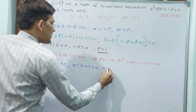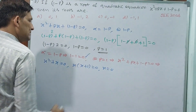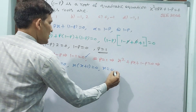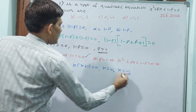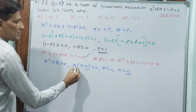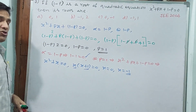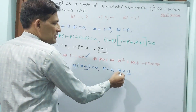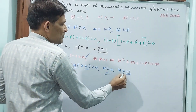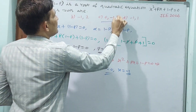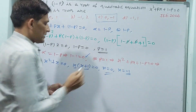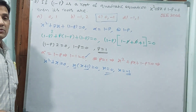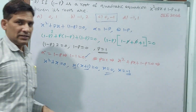We already found one root is zero. From x + 1 = 0, x = -1. So the two roots are x = 0 and x = -1. This is your answer.